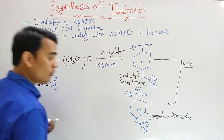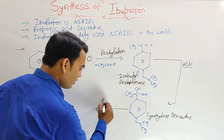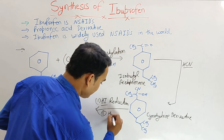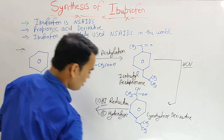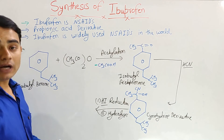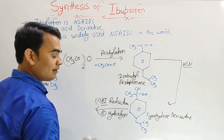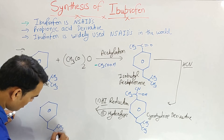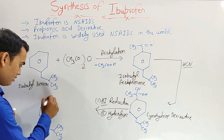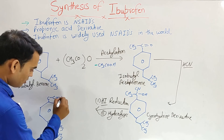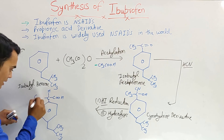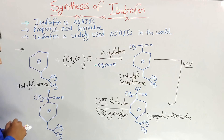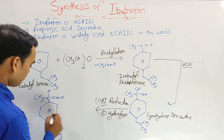This cyanohydrin derivative then undergoes reduction in the presence of hydrogen iodide (HI), followed by hydrolysis. In this step, the cyanide group is converted to a carboxylic acid group (C=O with OH). The final compound formed — with the propionic acid chain (CH3, CH, C=O, OH), phenyl ring, and isobutyl group — is ibuprofen.